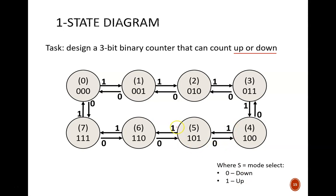These S values are written next to the arrows between the nodes. Clearly, while S equals one the count will move up the numbers five, six, seven, zero, and so on. And while S equals zero the count will move down: two, one, zero, seven, and so on.